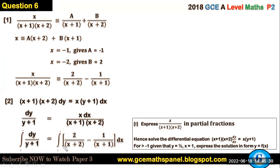So instead of writing x/[(x+1)(x+2)], this is what I already expressed here in partial fractions, so I'm just going to copy it. This integral now gives us, for the left-hand side, when you integrate, ln of the absolute value of (y+1).